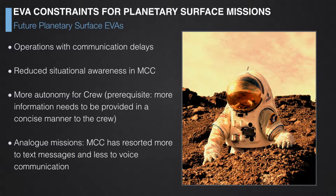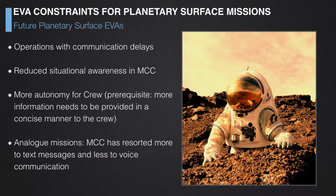In contrast, future planetary EVA missions will operate with a communications delay that can range from 6-7 minutes to 20 minutes for Mars, before a message is received on the other side. There is reduced situational awareness at mission control because of this delay — you only know what happened 7 to 20 minutes ago. Therefore, more autonomy will be needed for the crew, and more information will need to be conveyed to them in an efficient and concise manner, requiring a different information system.